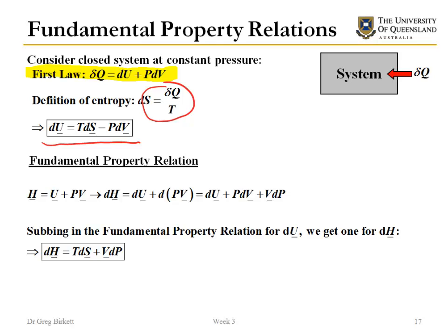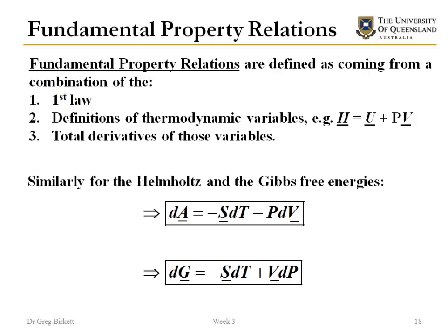To get the one that involves enthalpy, we insert this fundamental property relation into our definition of enthalpy, and when we do that it simplifies down to give us our fundamental property relationship between enthalpy, entropy, and pressure. We can continue to do this to get fundamental property relationships for the Helmholtz free energy and for the Gibbs free energy. What all these have in common is that they depend on the first law, thermodynamic definitions, and total derivatives of those variables.